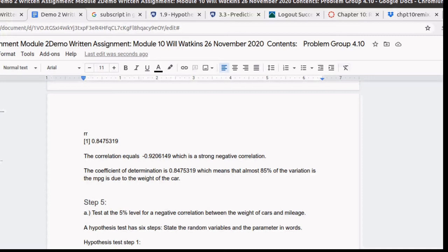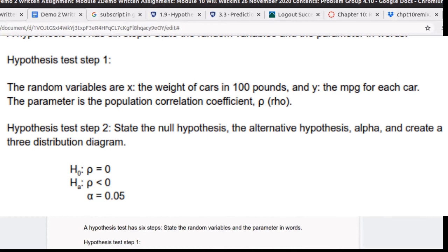Step two in a hypothesis test is to state the null hypothesis, the alternative hypothesis, alpha, and to create a three distribution diagram. So let's put those in here. We're interested in the null hypothesis, which rho is equal to... The null hypothesis always has an equal in it. Rho happens to be zero. That means that there is no correlation. We need our alternative hypothesis.